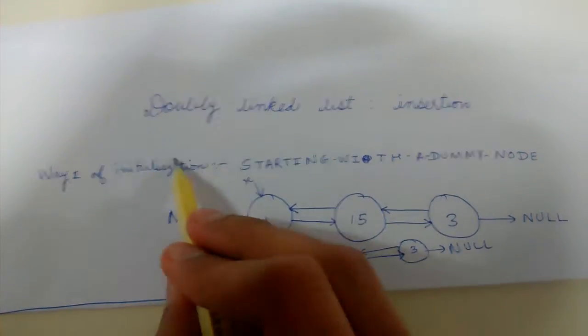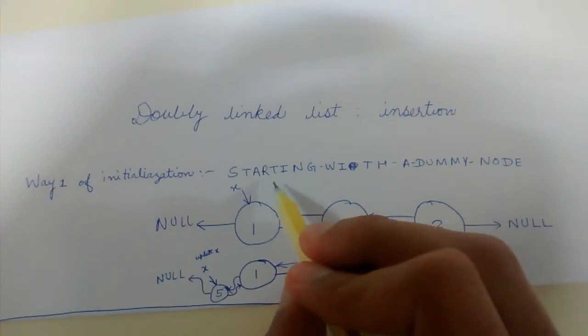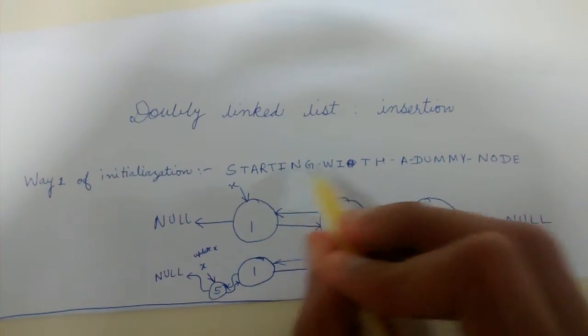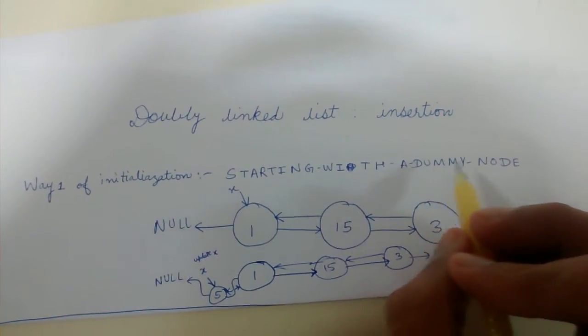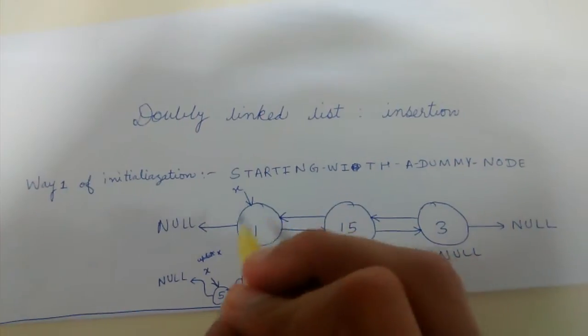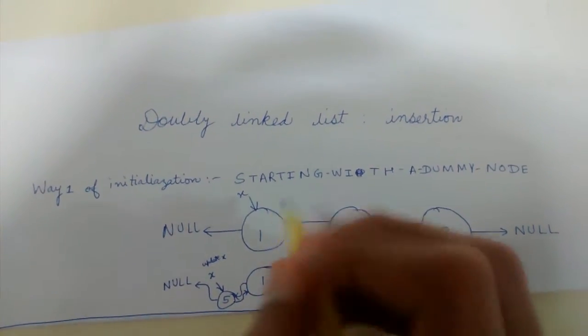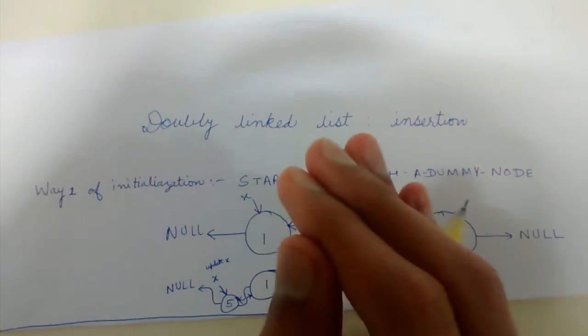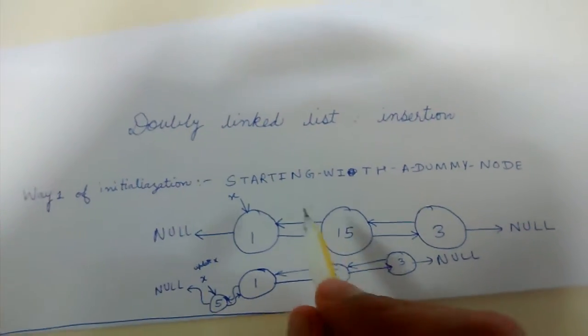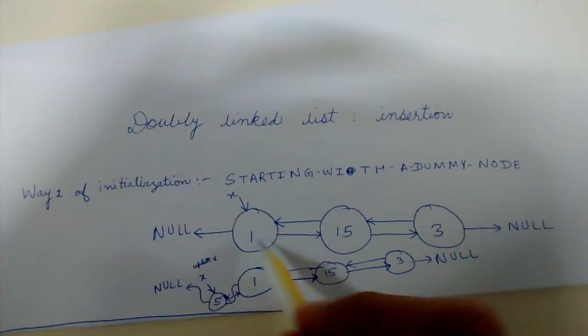This is way one of initialization: we initially start with a dummy node, that is an empty placeholder, and we do not start with empty linked list in the starting. So at least one node is always there.